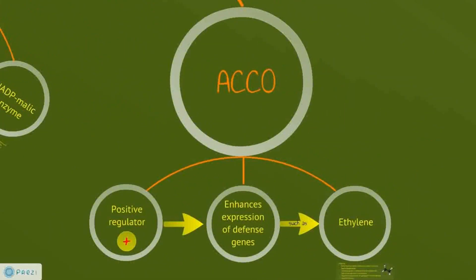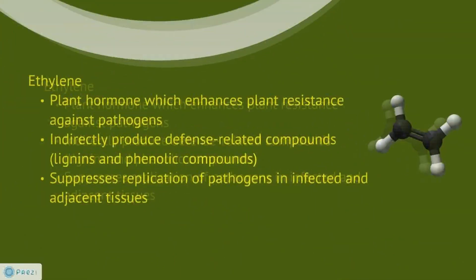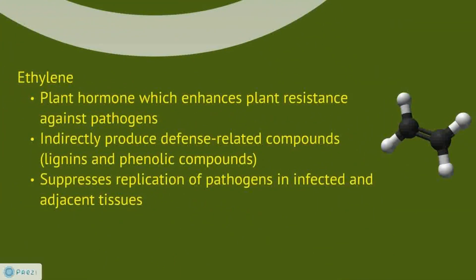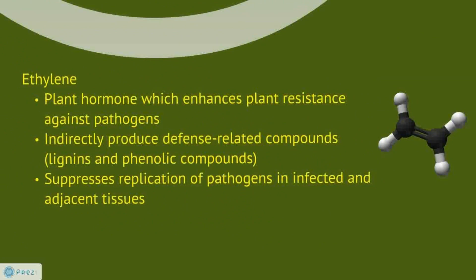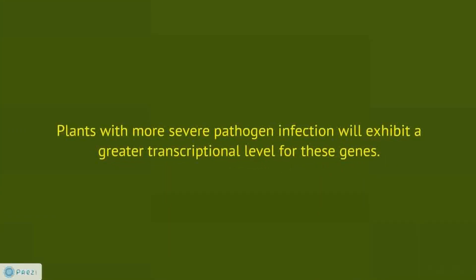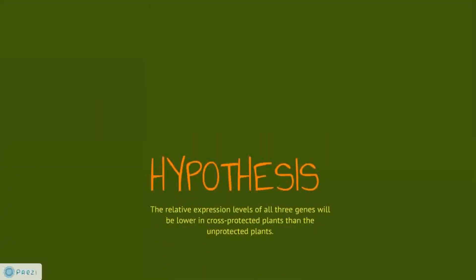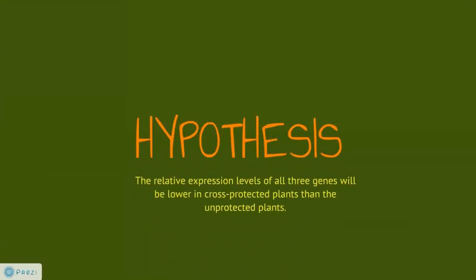ACC oxidase is a positive regulator which enhances the production of ethylene. Ethylene is a plant hormone which enhances resistance against pathogens. This means that plants with more severe pathogen infection will have higher transcriptional levels for all three genes. Thus, we hypothesize that the relative expression levels of all three genes will be lower in cross-protected plants than unprotected plants.